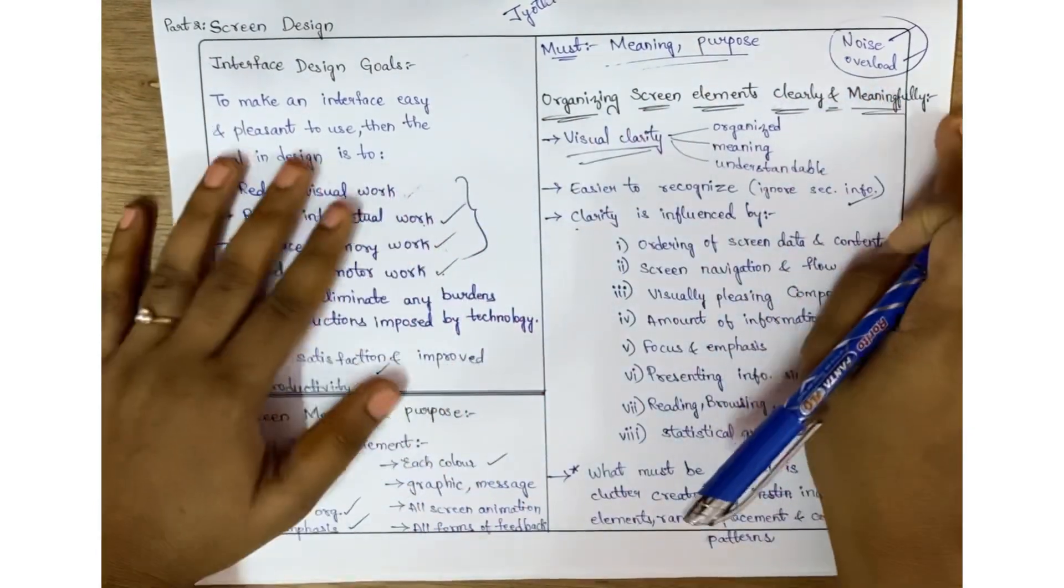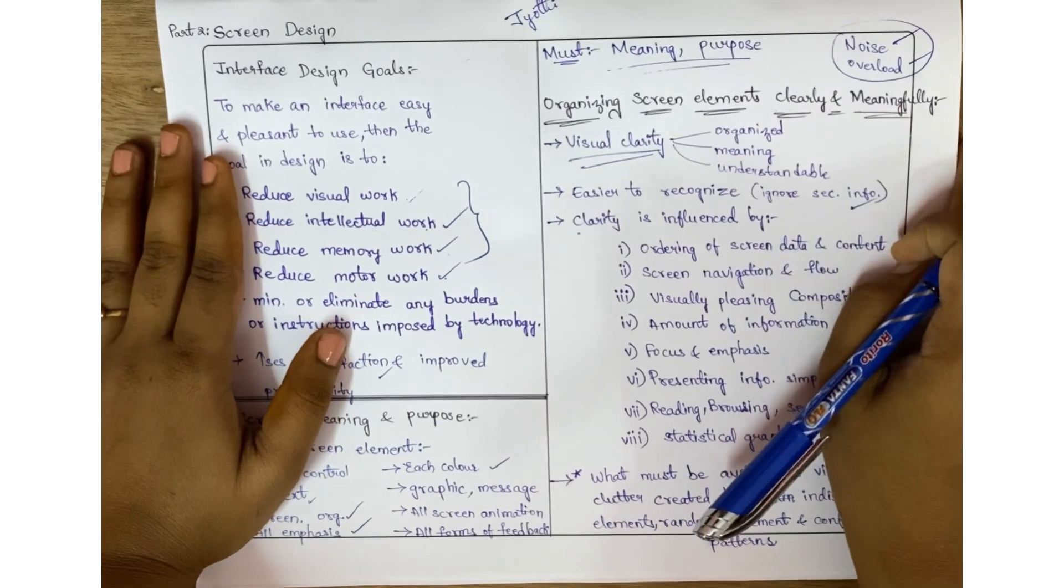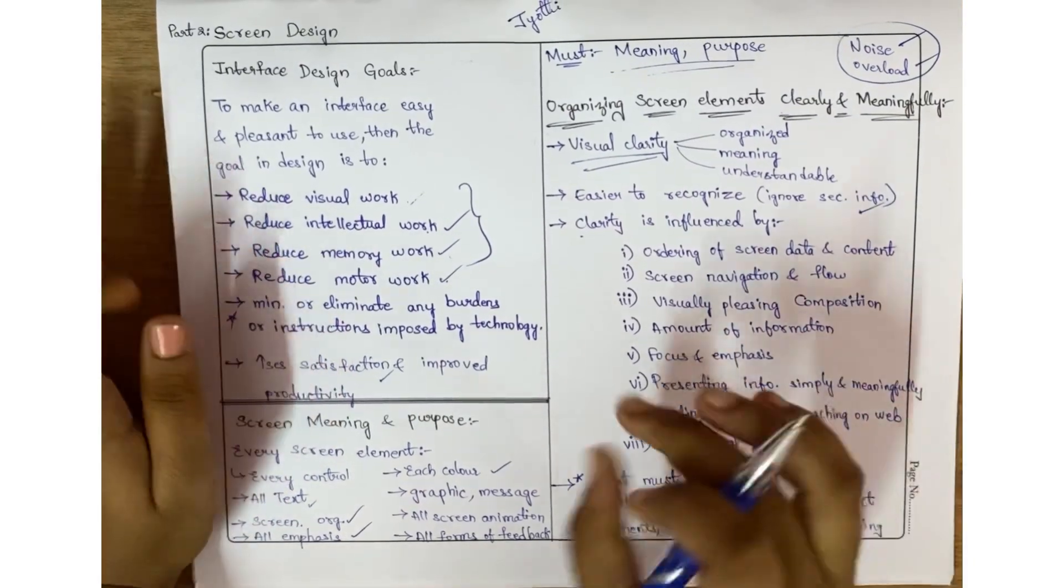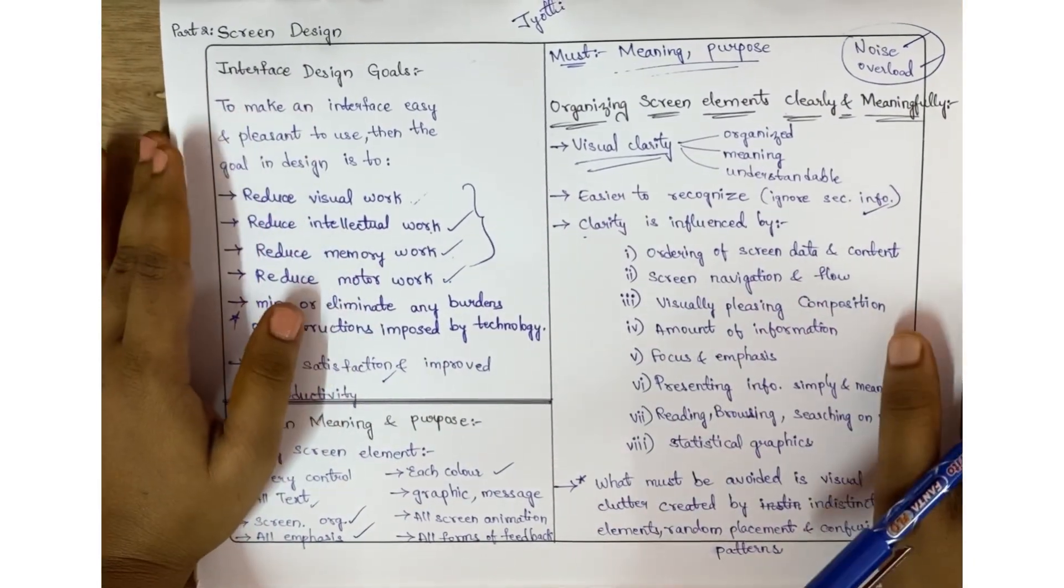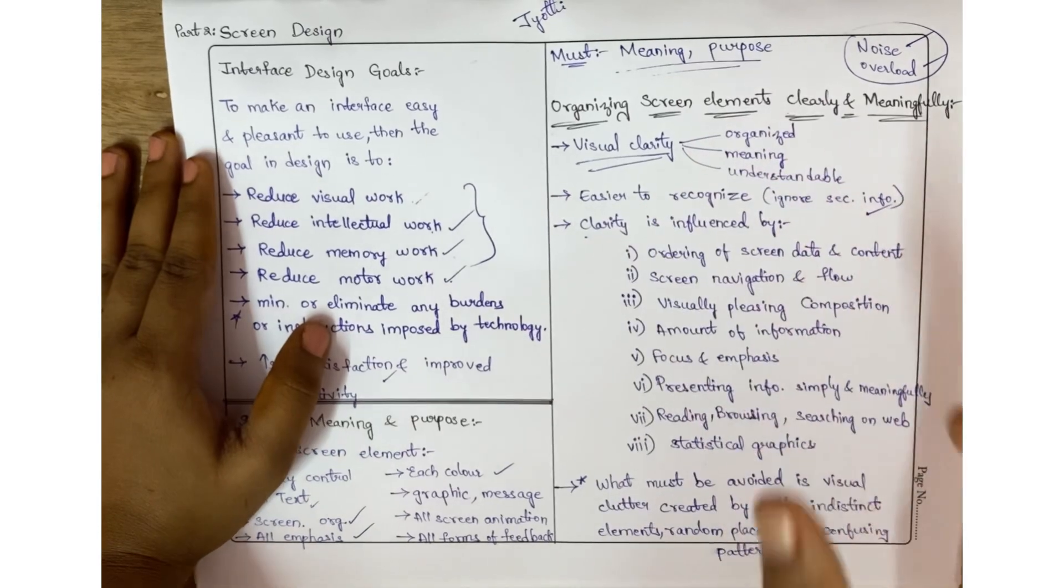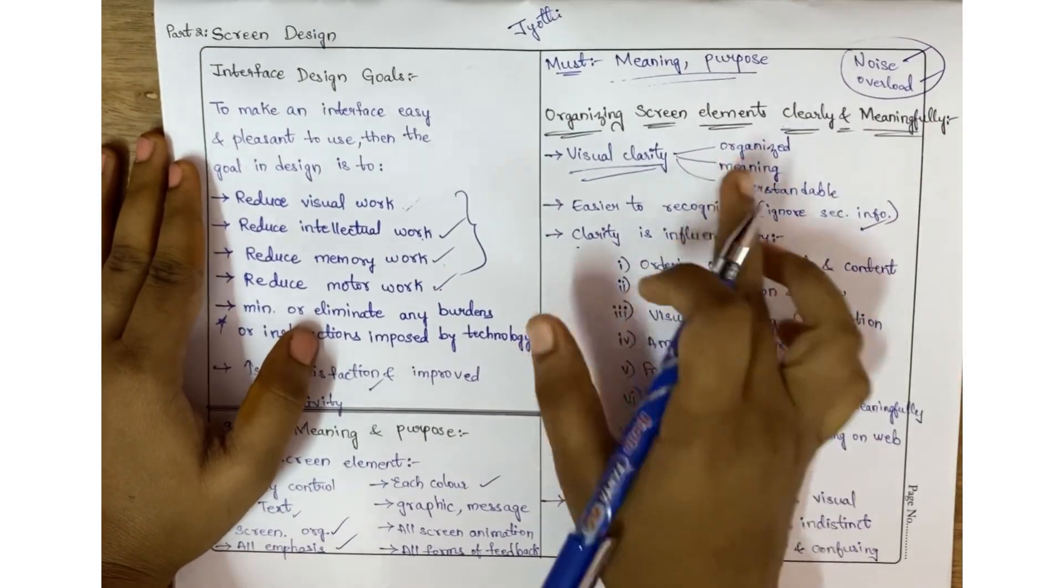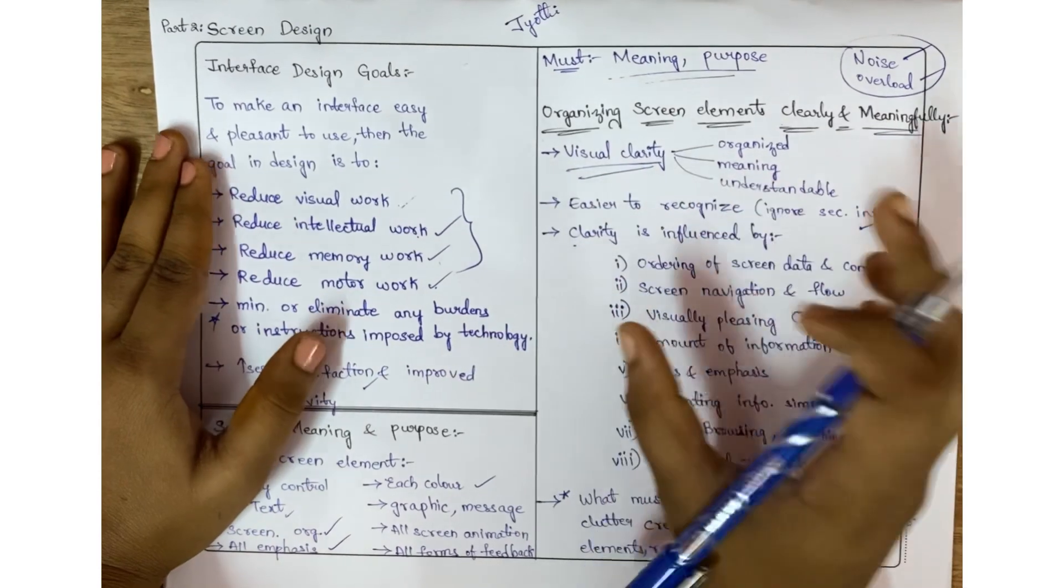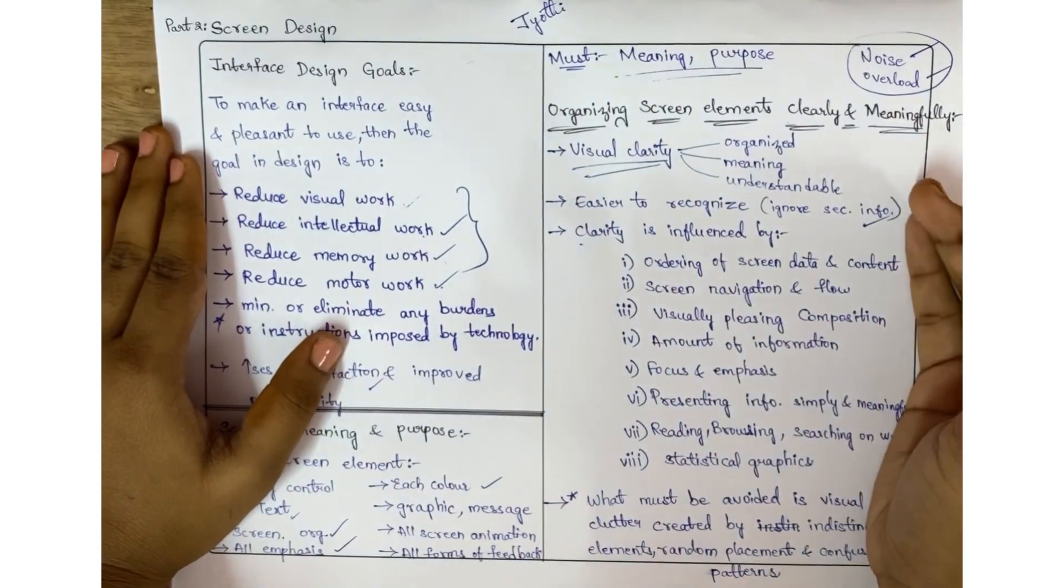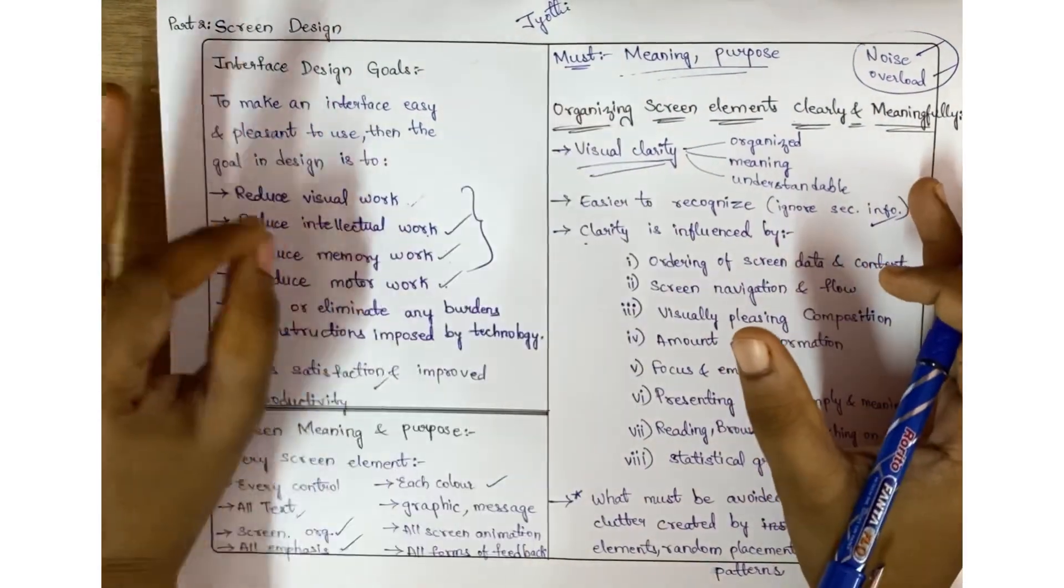Coming to organizing screen elements clearly and meaningfully. We need to organize the data very clearly and meaningfully. First, we should have visual clarity. If the organization is proper, then it will be clear. This clarity provides meaning and makes it easily understandable.